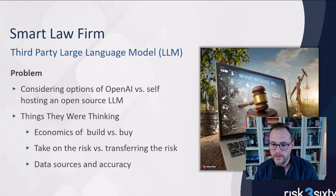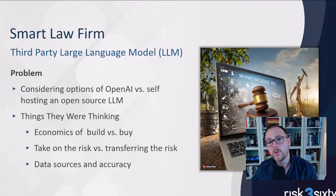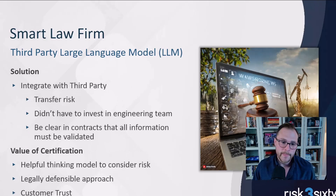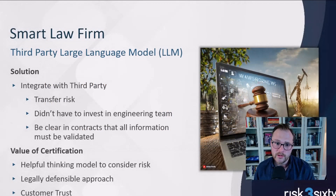The other thing they were thinking about was data sources and accuracy — how do you even go about training a large language model to get it sufficient to return great results? Some of their experimentation with OpenAI was already returning pretty good results. Their solution ultimately was to integrate with a third party, and the reason they chose to do that was because they did want to transfer some of that risk, feeling they'd get good results consistently by using something like OpenAI than trying to train their own system.